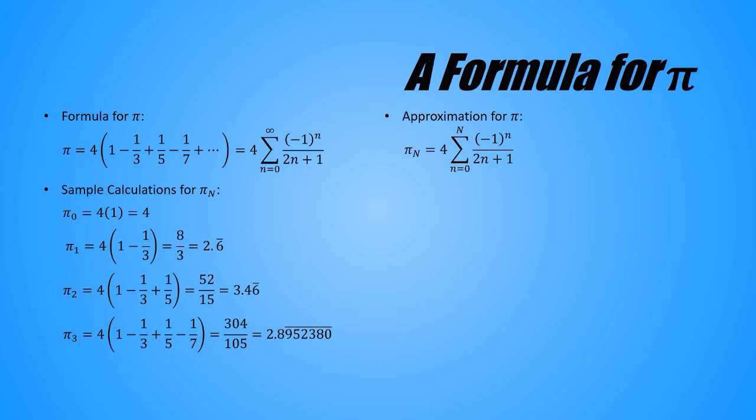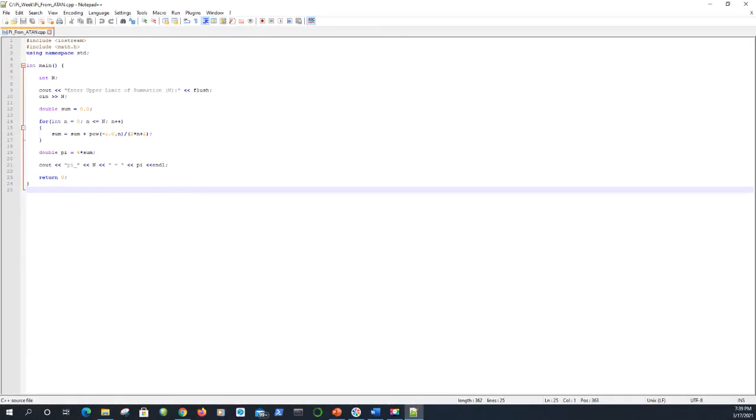However, do we really want to do this by hand? That'll be a no from me, dog. And that's why we'll be continuing this on the computer. I've written a C++ program to do the calculations for us. The program asks for capital N, the upper limit of summation. It computes the formula in the slides and it spits out an approximation for pi. Let's see how this works out for us.